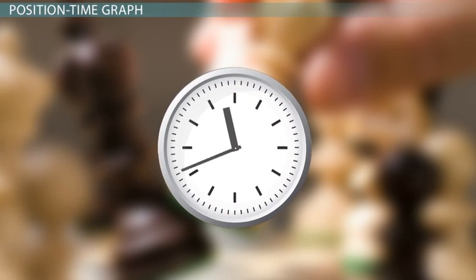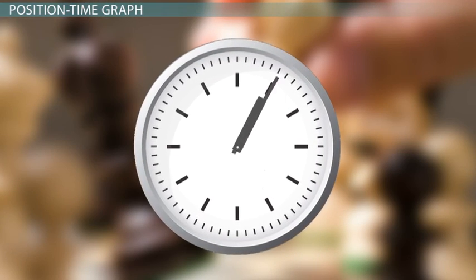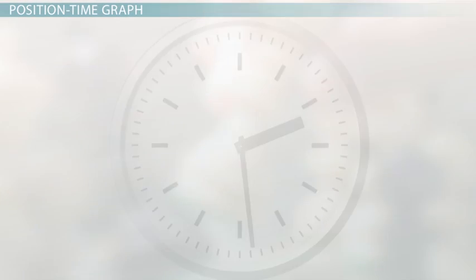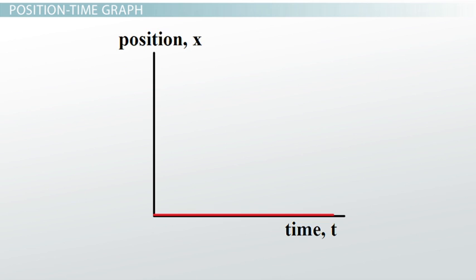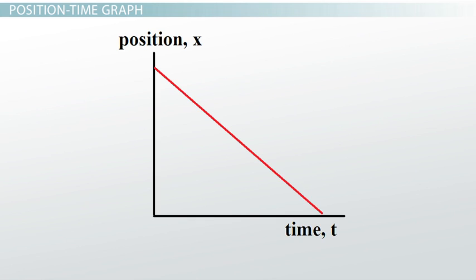When your position changes over time, you can show this using a position-time graph. A position-time graph has position on the y-axis and time on the x-axis. If you're not moving, you'll get a flat line. If you're not moving at the origin it will look one way, but if you're not moving at a position that isn't the origin, it will look different. If you're moving at a constant speed, you'll get a diagonal line — moving towards the origin looks one way, and moving away from the origin looks another.